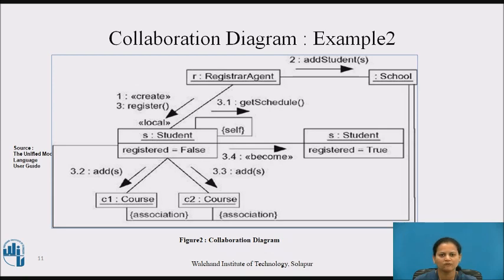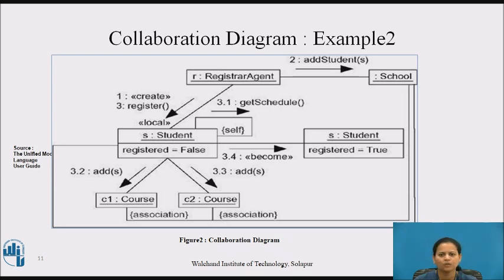An iteration represents a repeated sequence of messages. To model an iteration, you prefix the sequence number of a message with an iteration expression such as [i = 1..n], or just a star (*) if you want to indicate iteration but do not want to specify its details. An iteration indicates that the message and any nested messages will be repeated in accordance with the given expression. Similarly, a condition represents a message whose execution is contingent on the evaluation of a boolean condition. To model a condition, you prefix the sequence number with a condition clause such as [x > 0]. The alternate paths of a branch will have the same sequence number, but each path must be uniquely distinguishable by a non-overlapping condition.